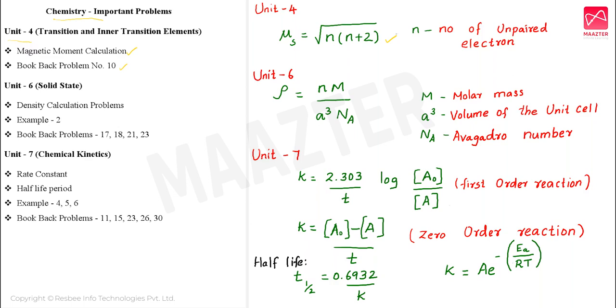When the number of unpaired electrons is 1 or 2, it is paramagnetic in nature. So we will learn how to determine this.